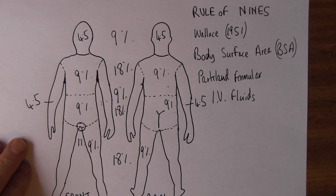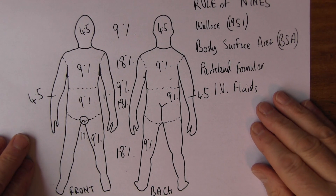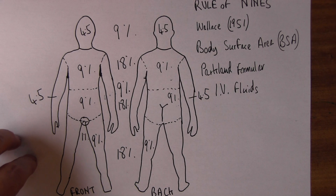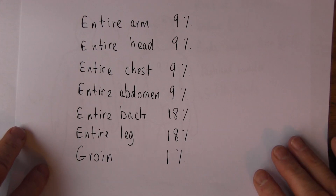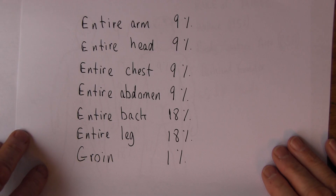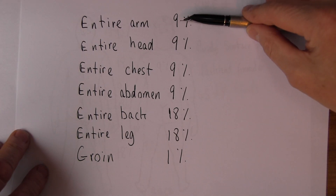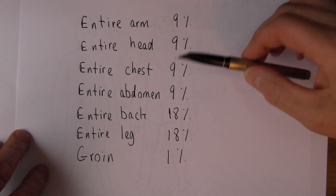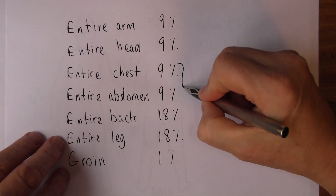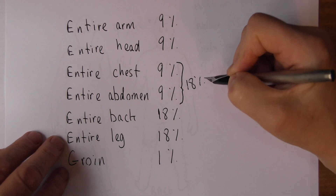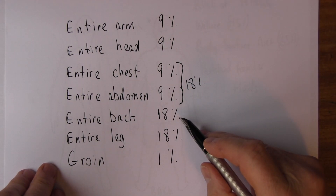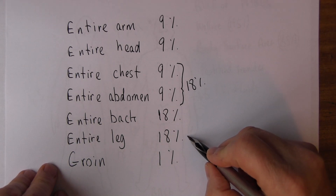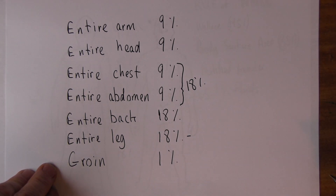Now there are more accurate formulas you can use, but this is a good quick appreciation. Let's just look at the summary: entire arm 9%, entire head 9%. So half an arm is 4.5%, and the front or back of the head is 4.5%. Entire chest 9%, entire abdomen 9%, which makes 18% for the front. The entire back is 18%. Entire leg is 18%, so the front or back of a leg is 9%. And the groin area is 1%.